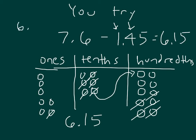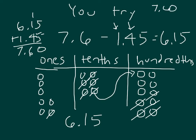If we look at the inverse operation and run our check using the traditional algorithm, we can see that we got the correct answer: 0, 1, 1 plus 1 is 2, plus 4 is 6. And then at my decimal point, 7.60, which is the same as 7.6. We also could have used our traditional algorithm to subtract 7.6 minus 1.45, making sure to line up the decimal points and change 7 and 6 tenths to 7 and 60 hundredths to match the 1 and 45 hundredths.